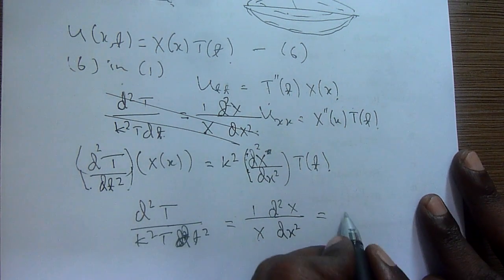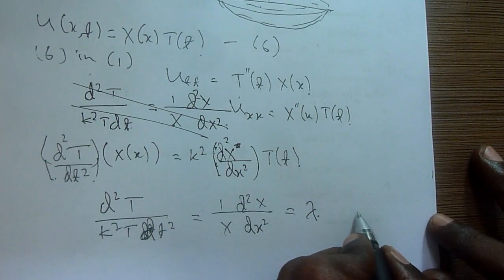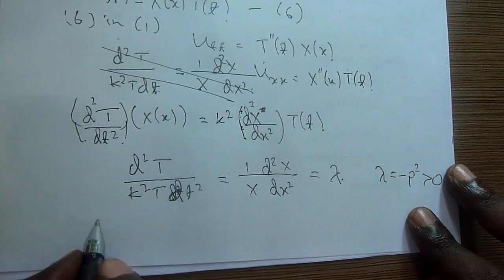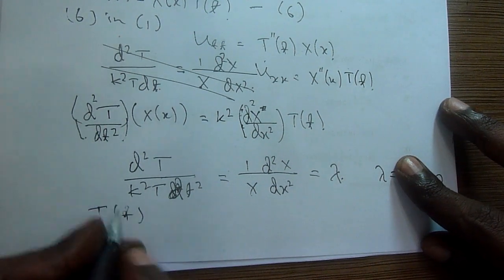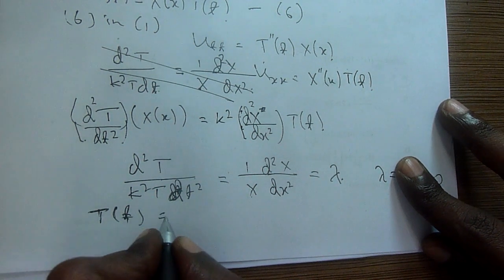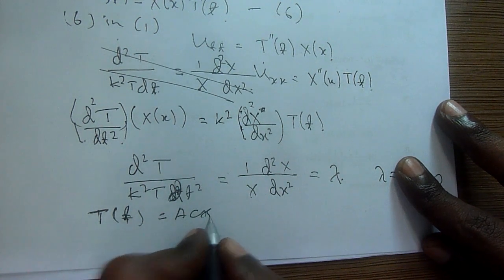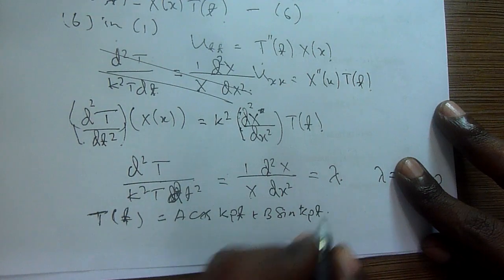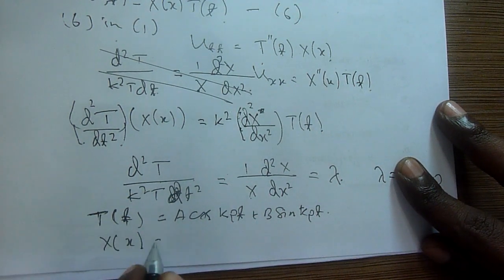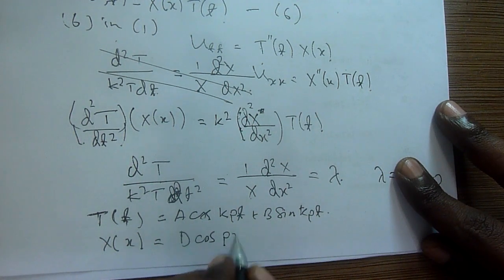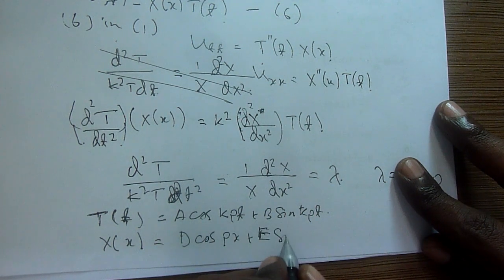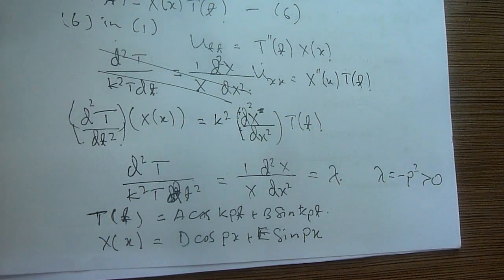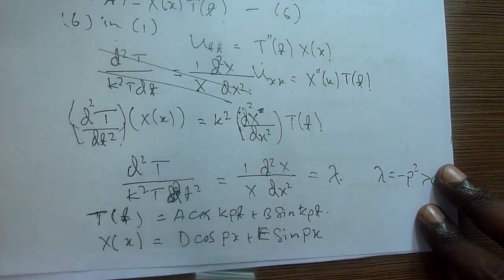Both sides can be equated to the constant lambda. This is what we learned before. You will get two formulas. For T(t): A·cos(kp·t) + B·sin(kp·t). For X(x): C·cos(p·x) + E·sin(p·x). It is very simple and straightforward.